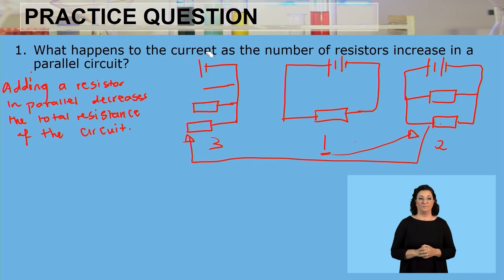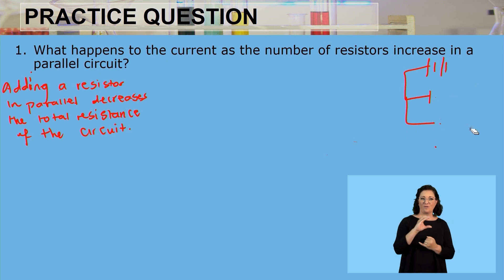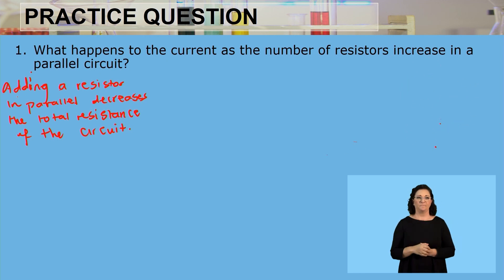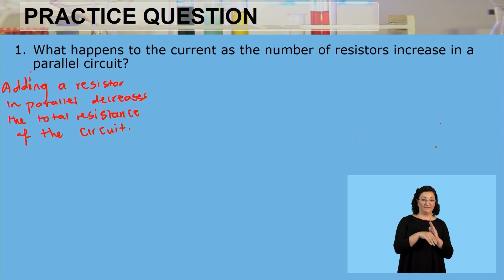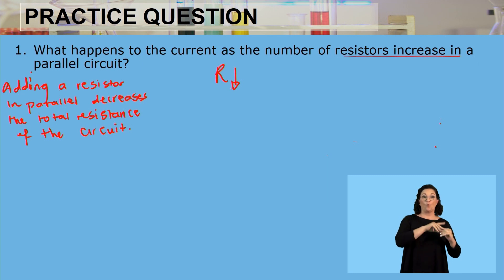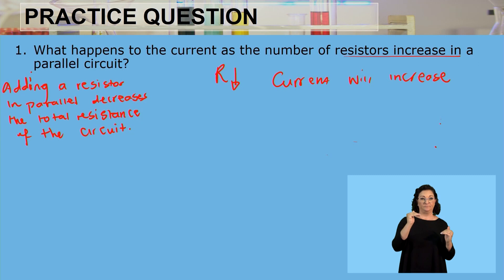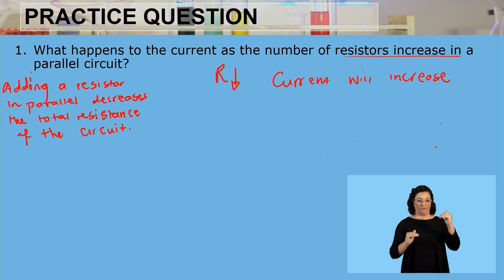So what does this mean for the current? The question is not based on the resistance but on the current. This means that if the resistance decreases, remember the relationship between resistance and current: if the resistance is going to be decreasing as we add or increase the number of resistors, if the resistance decreases, it means that the current will increase.